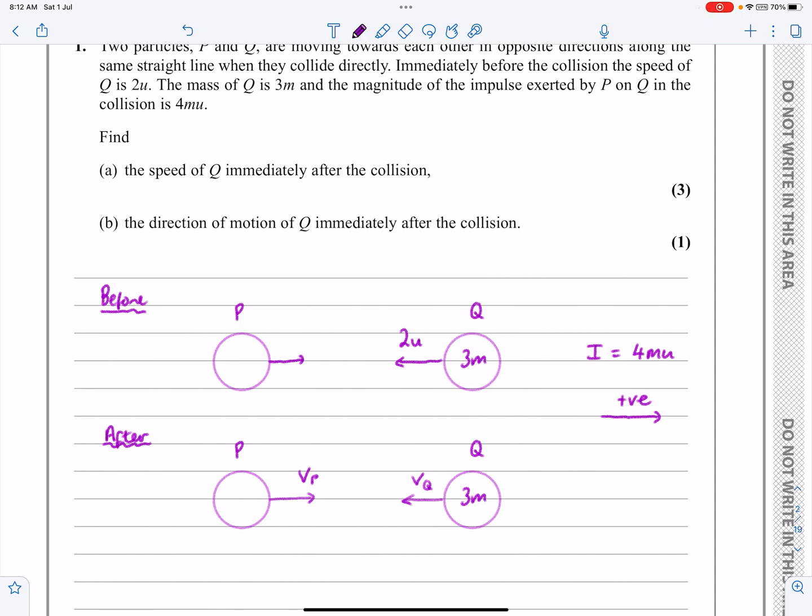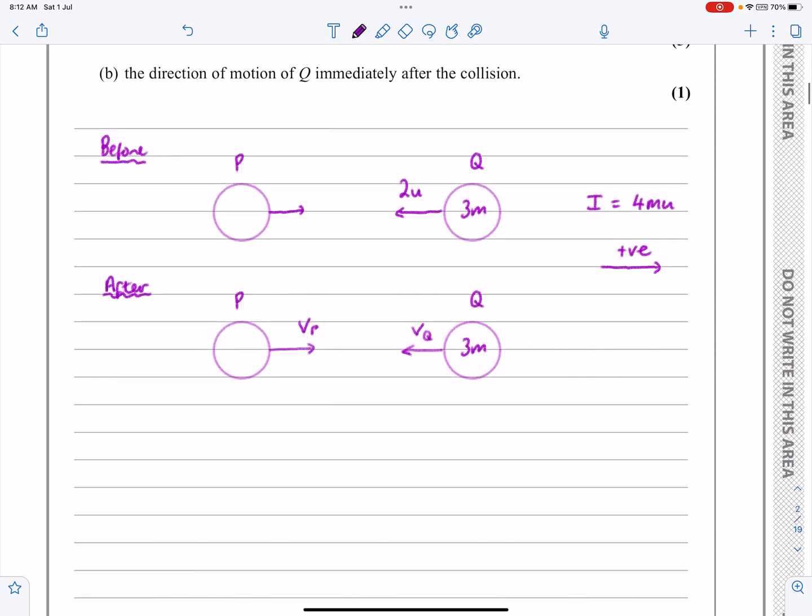Now, these two directions I've taken are arbitrary there for VP and VQ. The mass will tell me whether I've got them in the right direction. So don't panic too much about what you're going to assume. Let's go and actually get started with the question now.